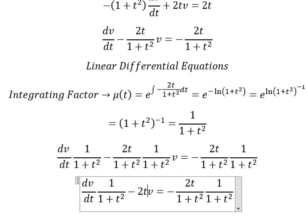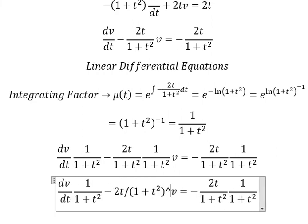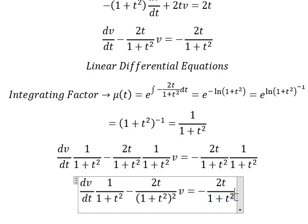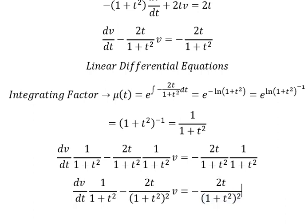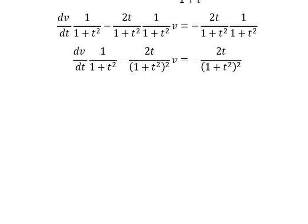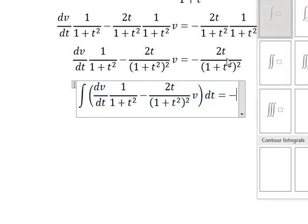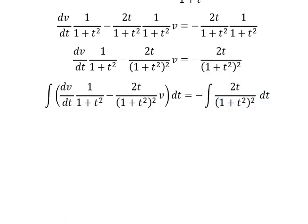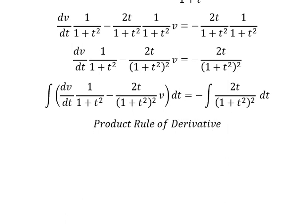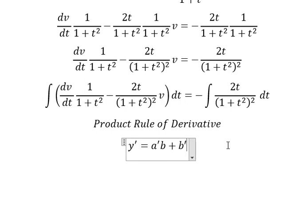We simplify both sides. Next, we integrate both sides. The left side is the result of the product rule — the first derivative of A times B plus the first derivative of B times A — so the integral of the left side gives us the product AB.